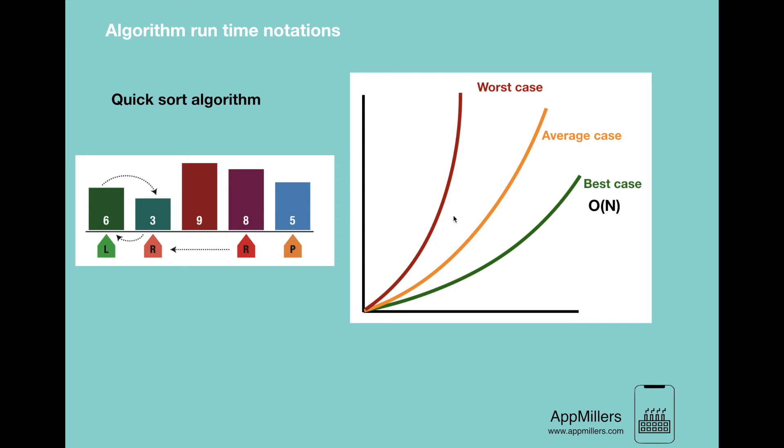In the worst case, if we are unlucky, the pivot is repeatedly the biggest element in the array. So the time complexity will be O(n²).